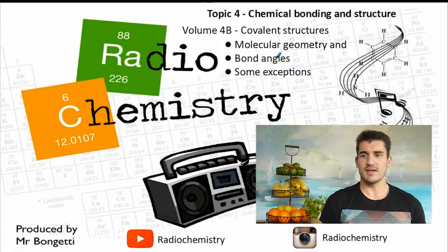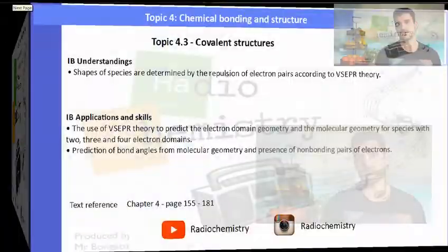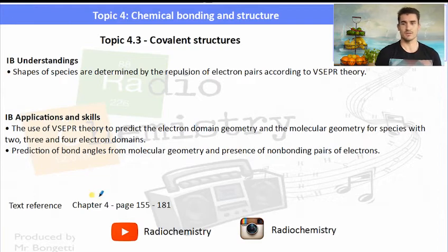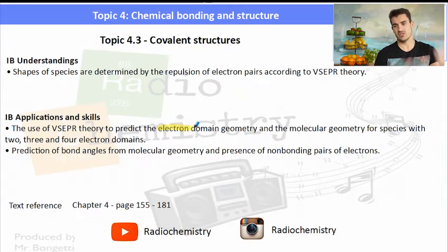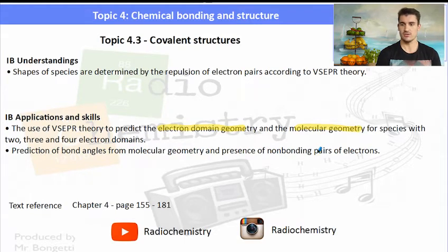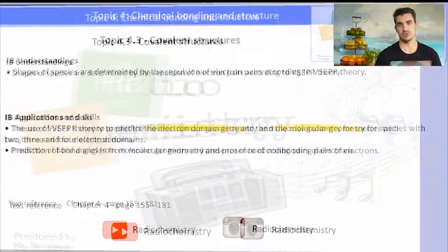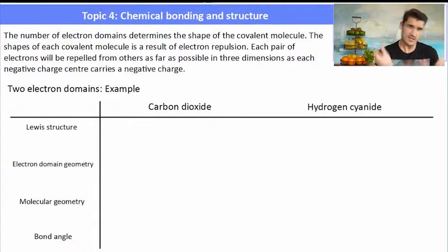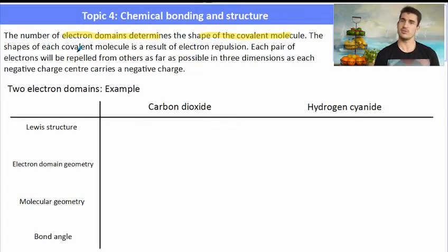In this volume we look at molecular geometry, bond angles, and we talk about some important exceptions for the VSEPR rule. The shapes of species are determined by the repulsion of electrons according to VSEPR — Valence Shell Electron Pair Repulsion. That indicates the electron domain and the molecular geometry of the molecule. The number of electron domains determines the shapes of these covalent molecules; the shape is a result of the electron repulsion.